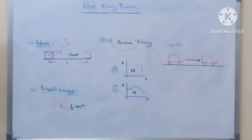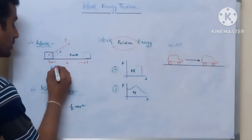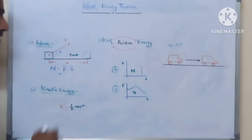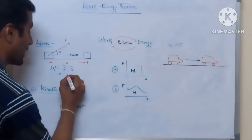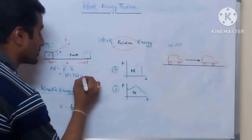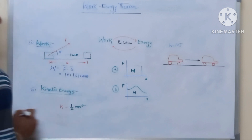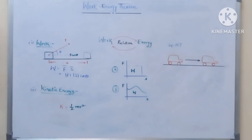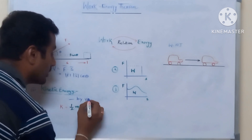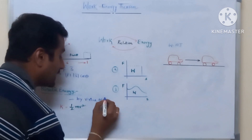What is work? Work is defined as the dot product of force and displacement. So W is equal to F-bar dot S-bar. Because it is a dot product, you can write this as the magnitude of F times the magnitude of S times cosine theta. This is the formula for work. Next, kinetic energy is the energy possessed by a body by virtue of its motion.